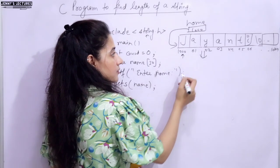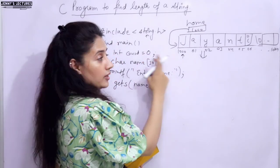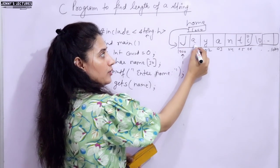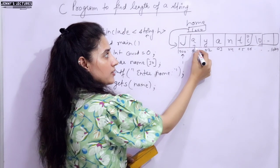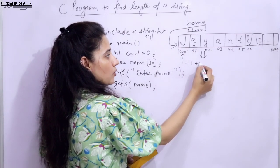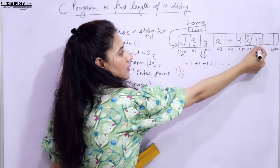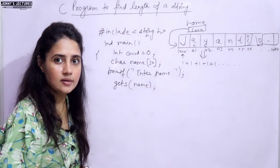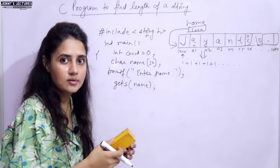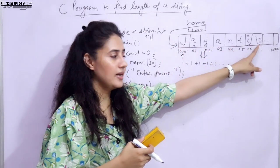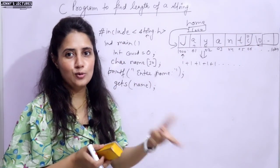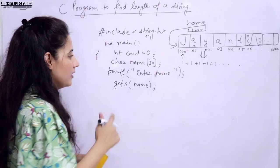Character by character: count starts at 0. When we find the first character 'J', count becomes 1. Then we traverse to 'a', count becomes 2, then plus 1, plus 1, plus 1 - until we find the null character. We are increasing count as we traverse the string. We can use a for loop, while loop, or do-while - any loop will work.